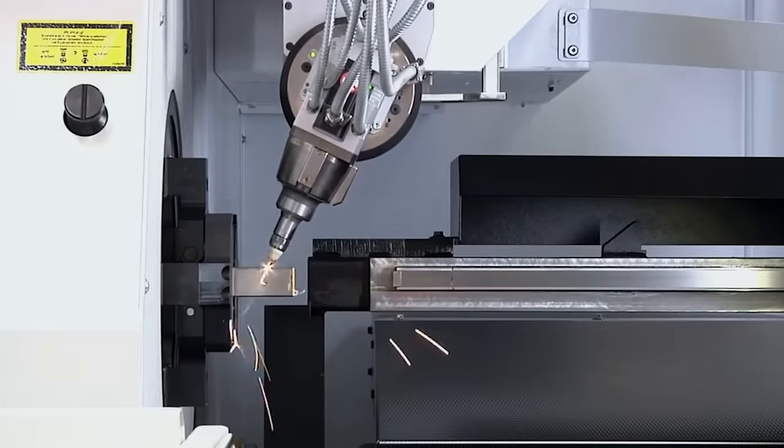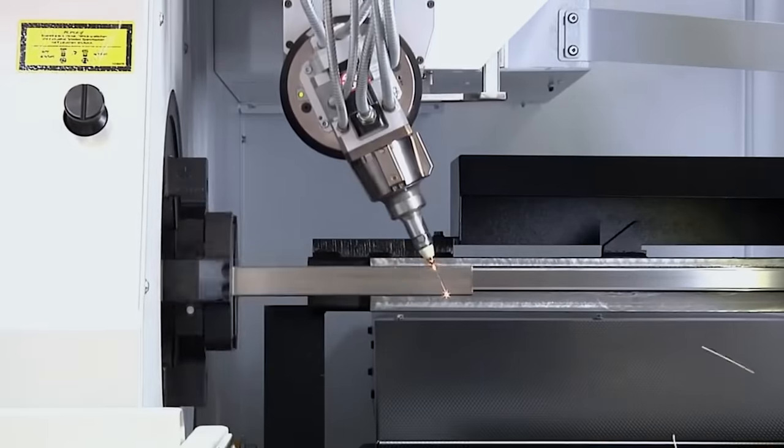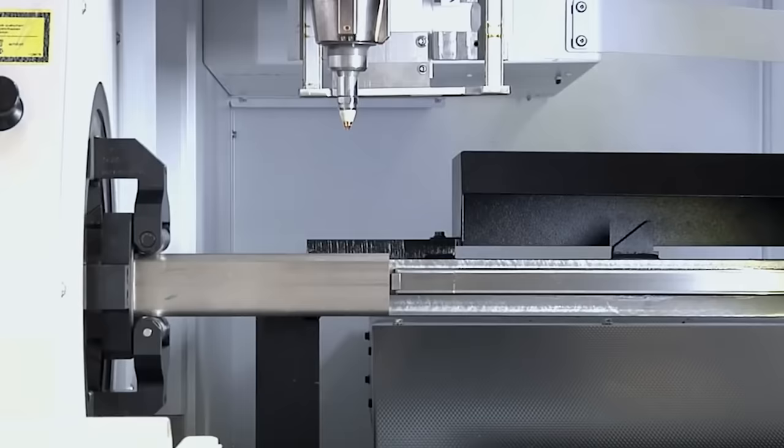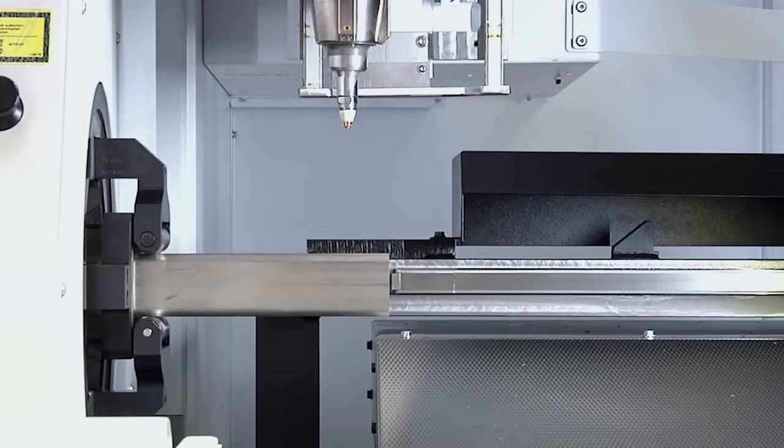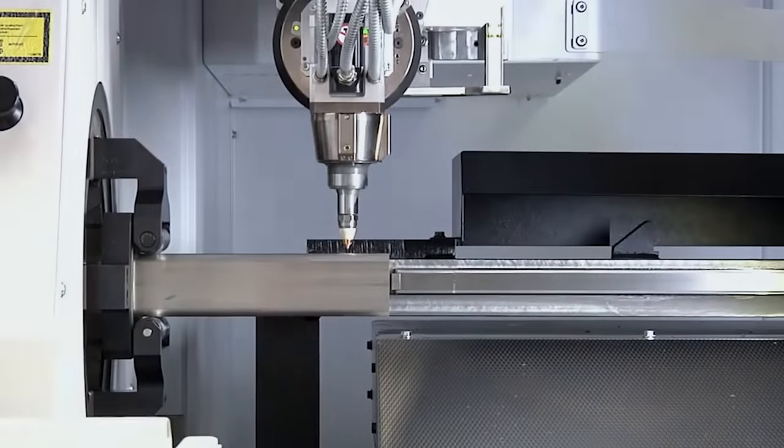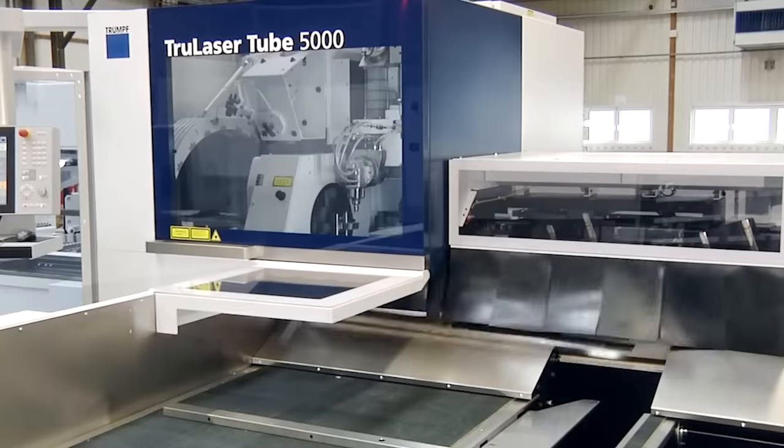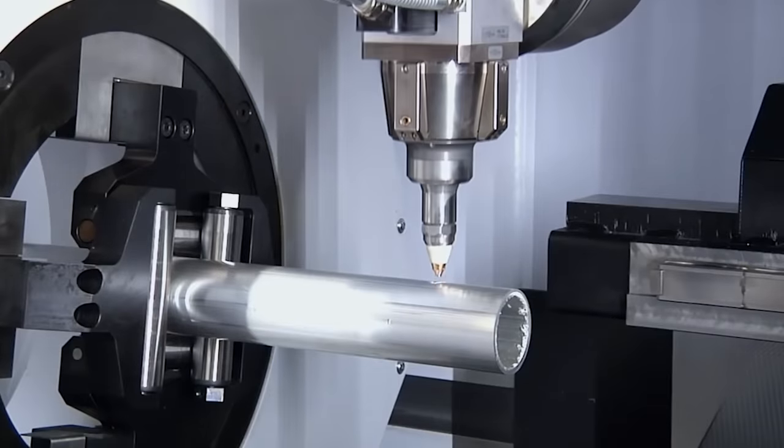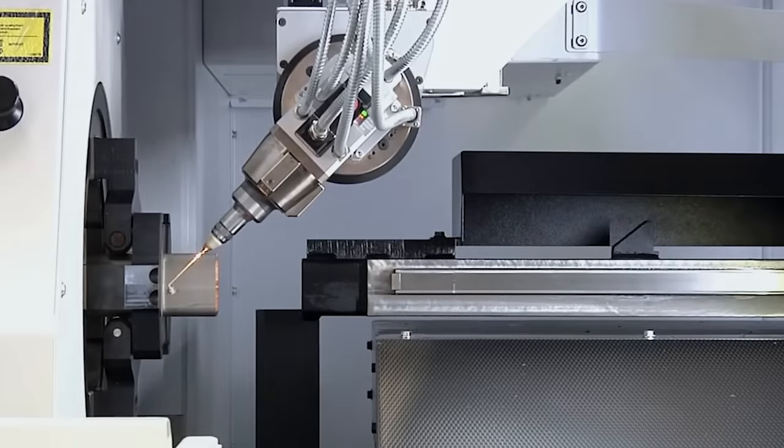Here we have the fastest pipe cutting machine in the world, the TruLaser Tube 5000 Fiber. The device is equipped with a solid laser for the production of tubes and profiles of different classes. It's characterized by precision cutting which makes it possible to produce very high quality products with an attractive design.